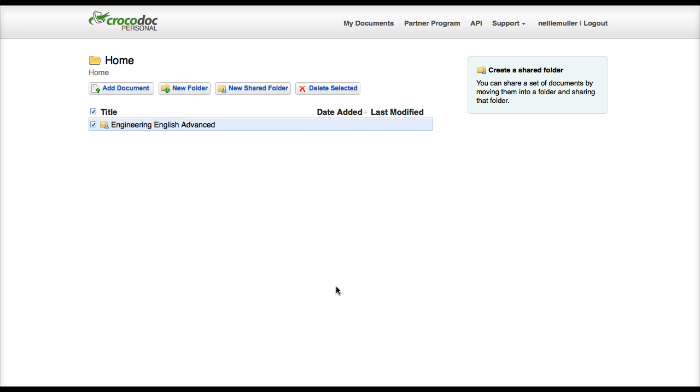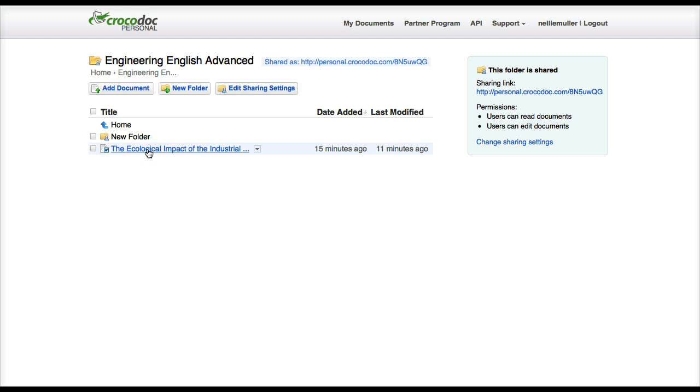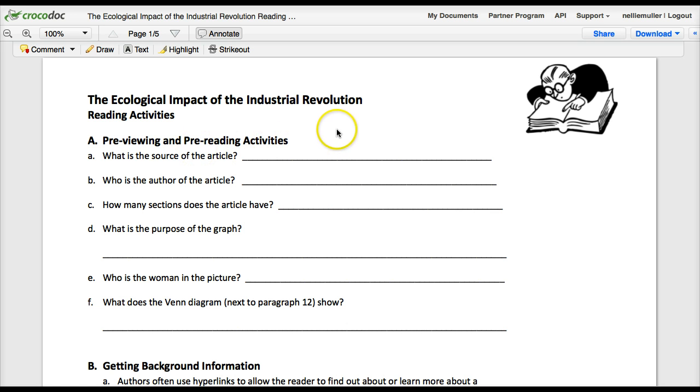You can also use your apps, your mobile phone, iPad, tablets, and so on. So it really makes learning a lot easier. Let's take a look at the first session. This is the first file that's in there right now. It's called Ecological Impact of the Industrial Revolution.